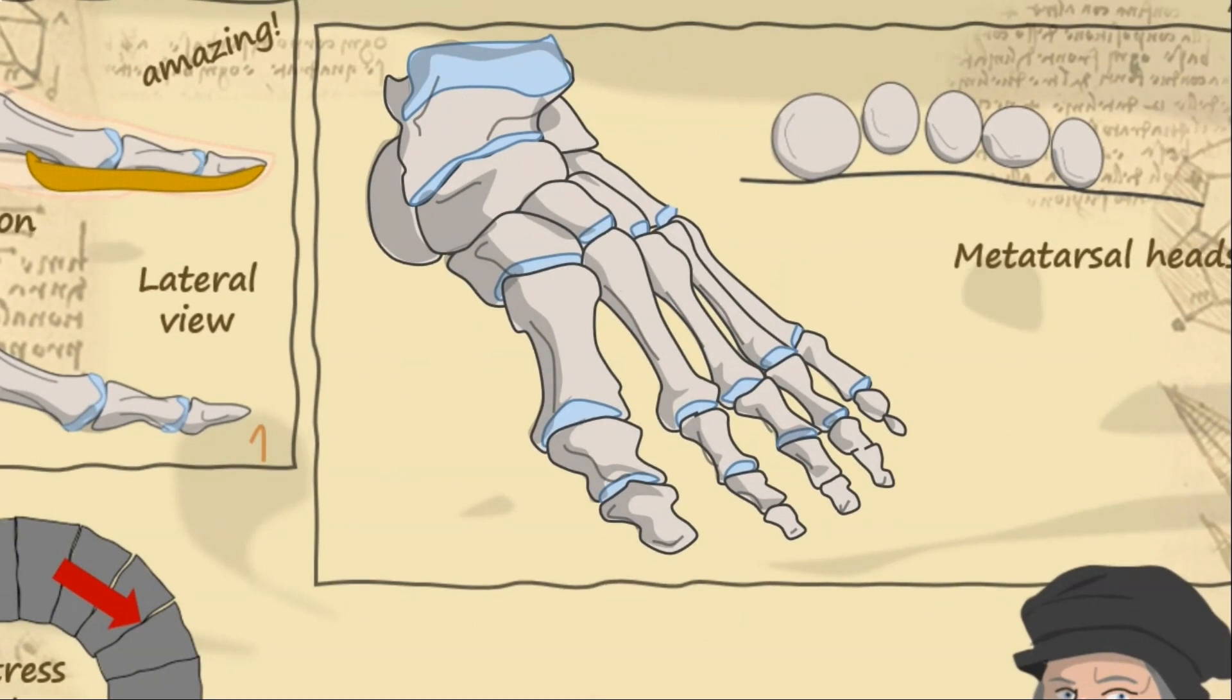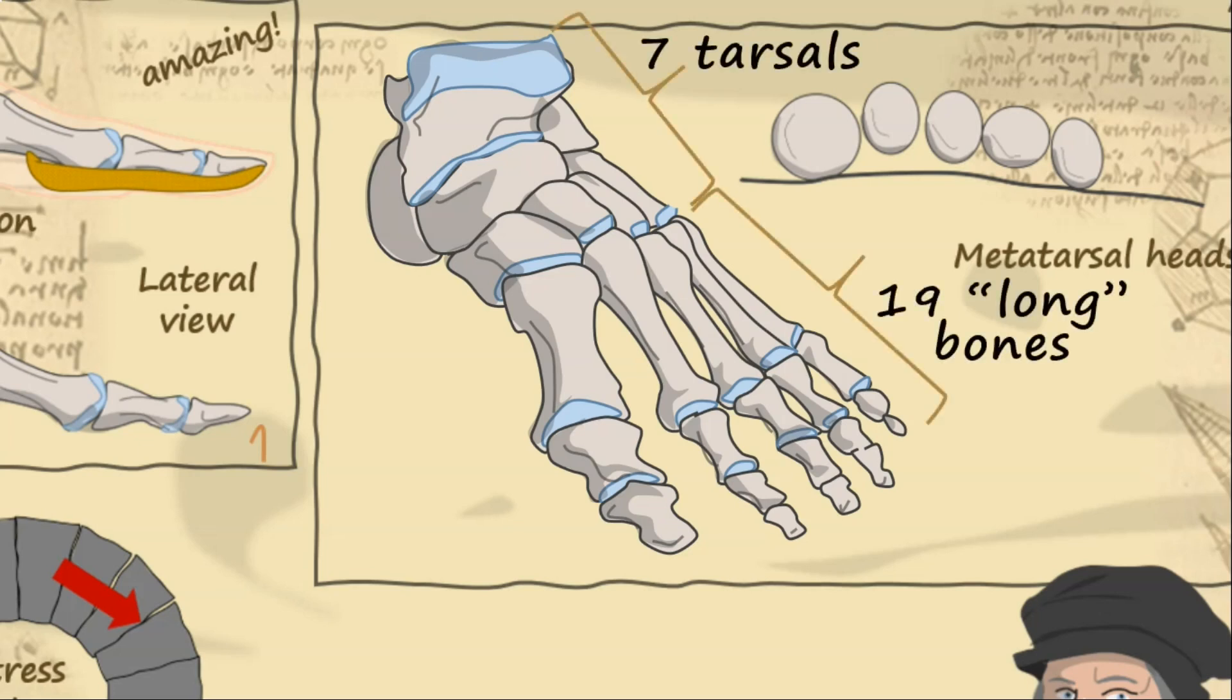The skeletal foot consists of 26 bones. There are seven short, irregularly shaped tarsal bones, and 19 long metatarsal and phalangeal bones projecting outwards from them. The tarsal bones resemble the carpals in your hands, and they probably come from a similar origin.